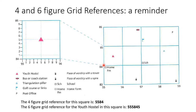OK, so moving on, we then have six figure grid references. This is more difficult, more challenging, often because there's an element of estimation and visualisation here. So we now focus in on this square up here. We're now trying to find the six figure grid reference for this youth hostel. We already know four of those numbers — six figure means six numbers. We've already got four of them from the four figure grid reference. What we want to do is add a number onto the end of each of those: 55-something, 84-something.